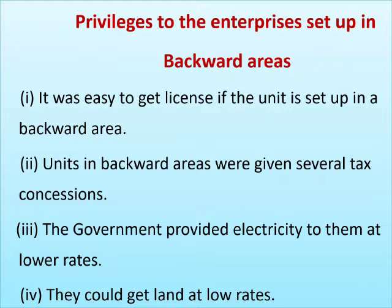It was easy to get a license if the unit was set up in a backward area. Units in backward areas were given several tax concessions, and the government provided electricity to them at lower rates.